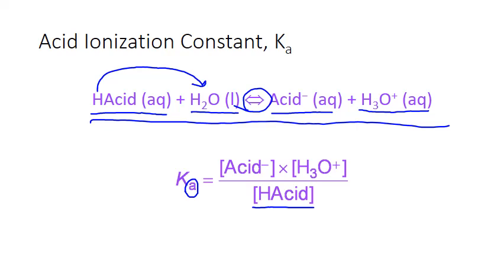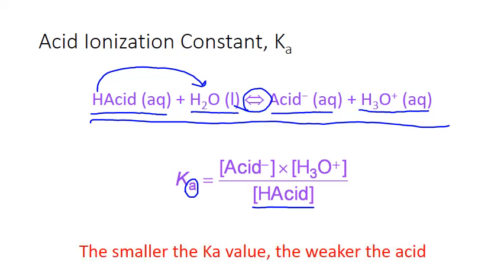There is an A subscript on the constant K — Ka — simply indicating that this is the equilibrium constant for acid ionization. Whenever you see Ka listed, you know it represents this general ionization process and that the equilibrium expression always takes this form. For a weak acid, there is less ionization and therefore less hydronium ion and acid anion formed. As a result, the Ka value is smaller than it would be for a stronger acid — the smaller the Ka, the weaker the acid.